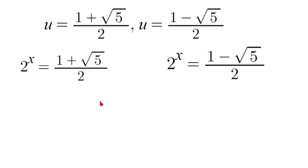So in order to solve this we are going to take the natural log of both sides. So natural log of 2 to the power of x is equal to natural log of 1 plus square root of 5 over 2.